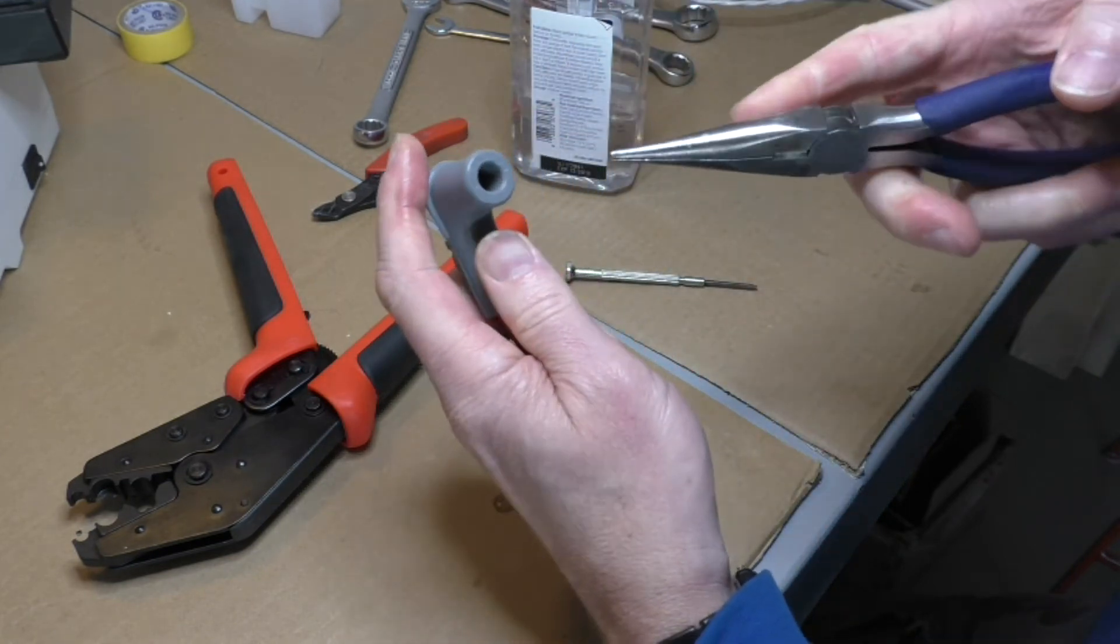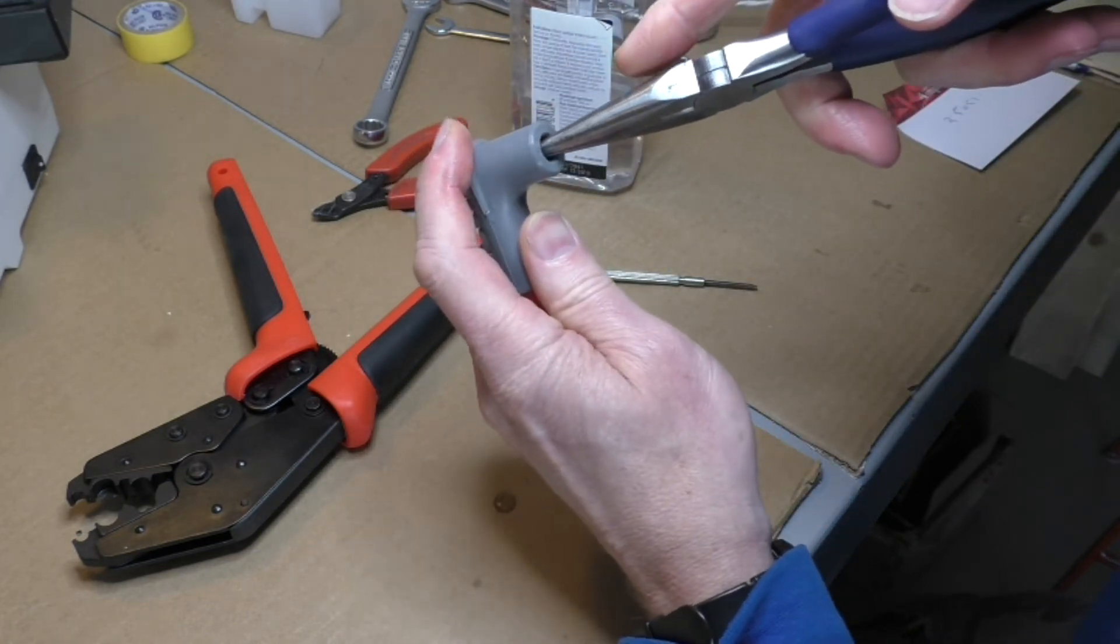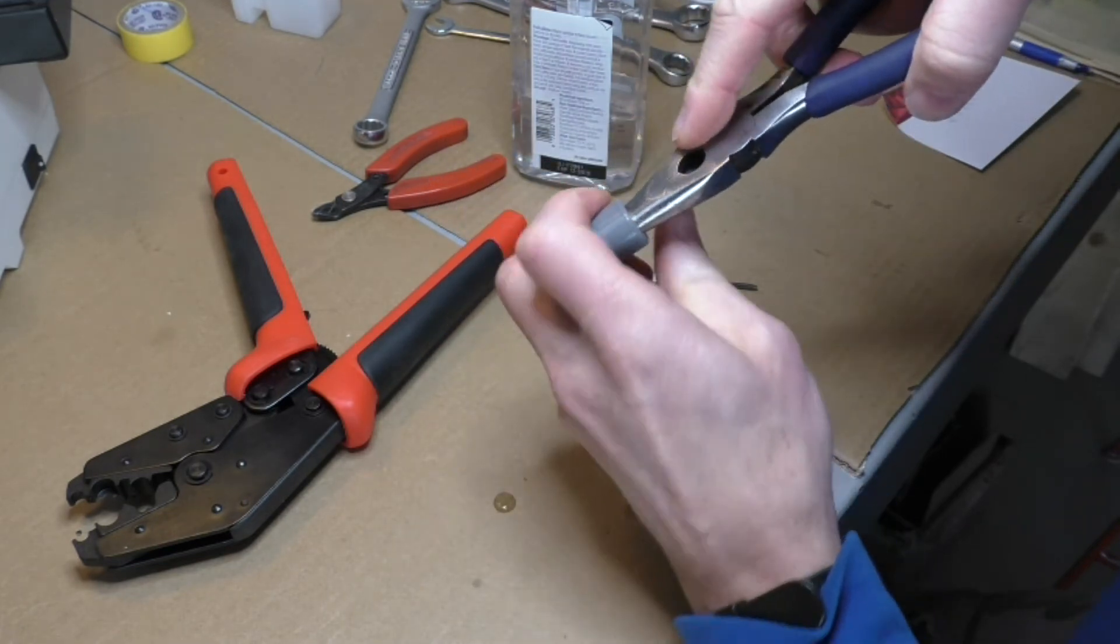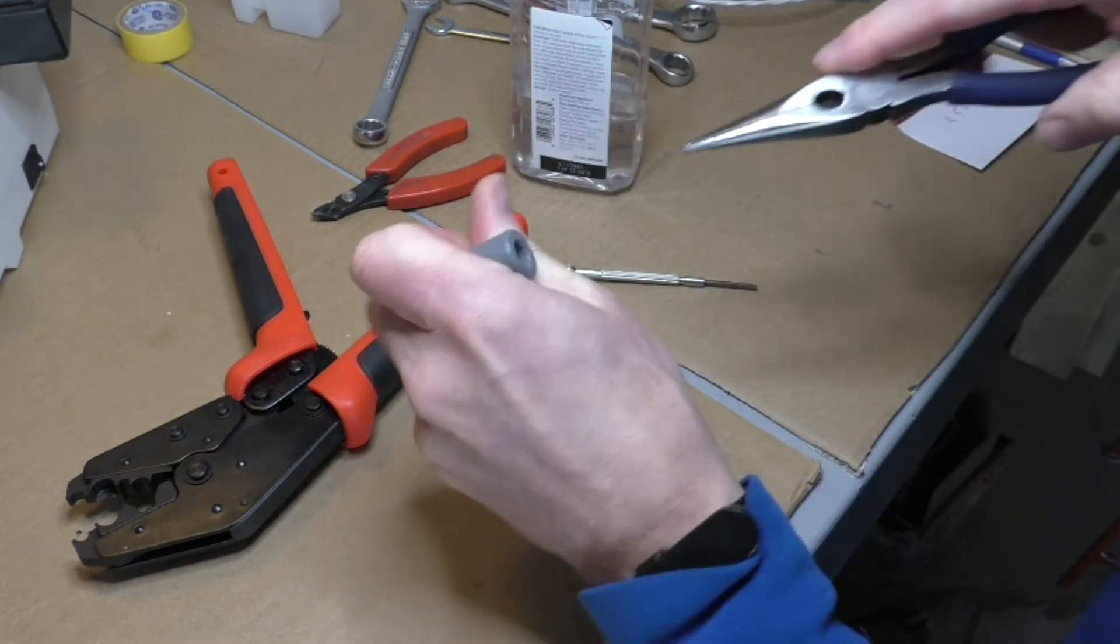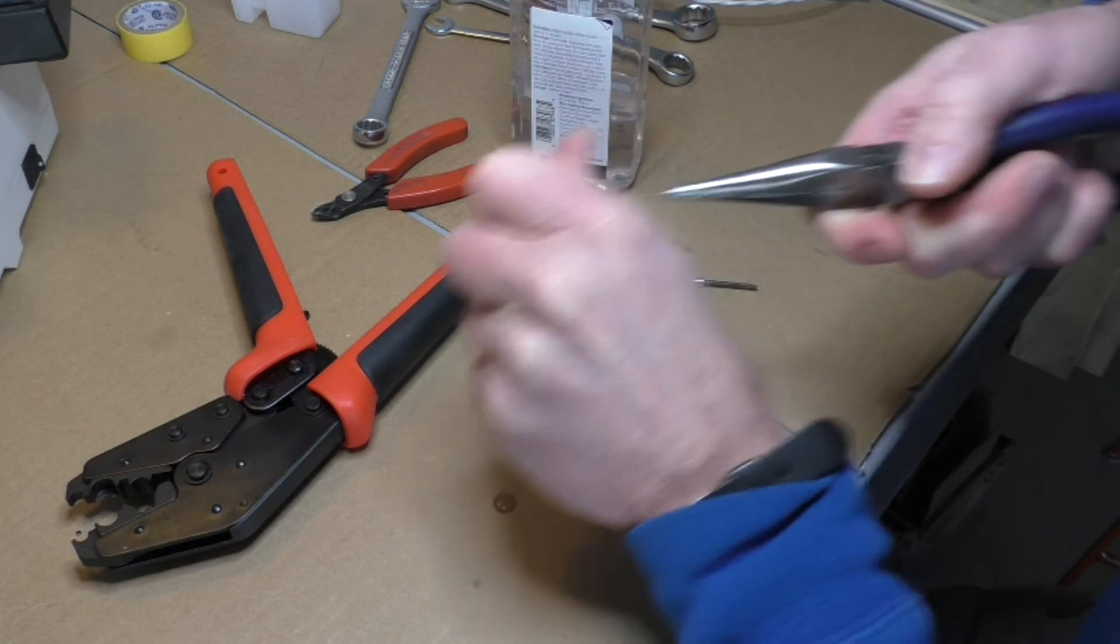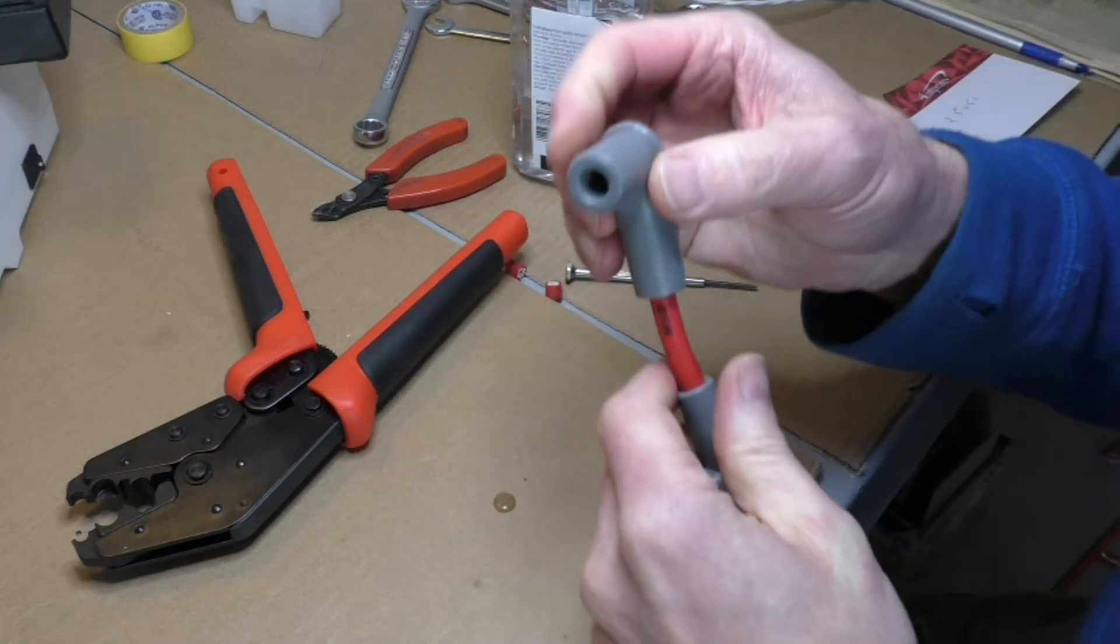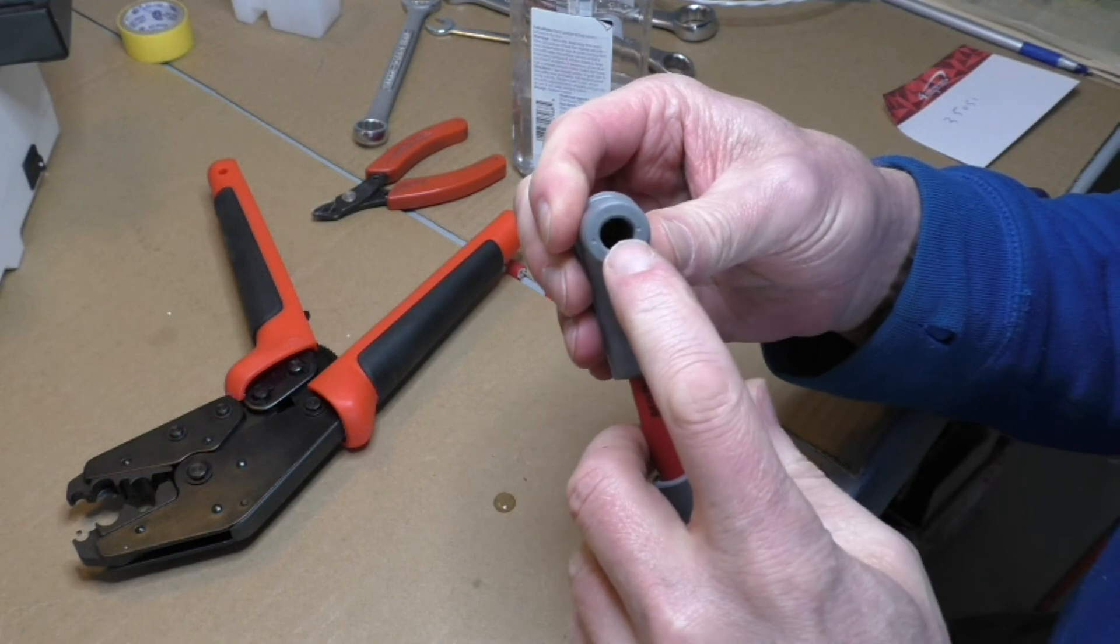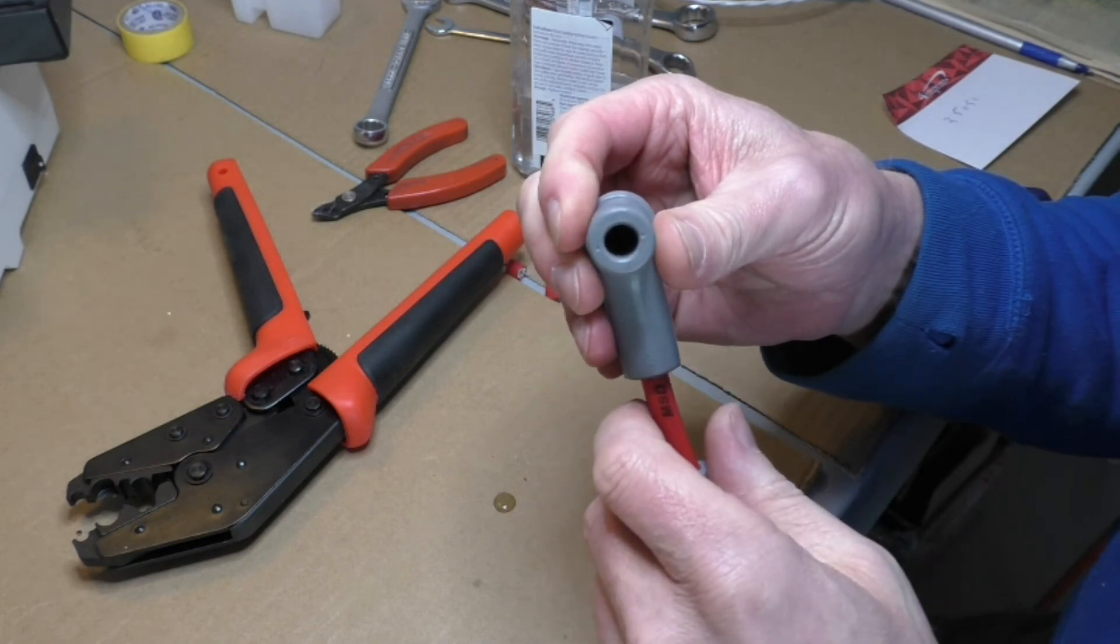Again, I like to take the pliers and pull the terminal in into the end of the boot here. And again, you should be able to see the spark plug terminal in there. So the spark plug will insert through the boot and clip onto the terminal nicely.